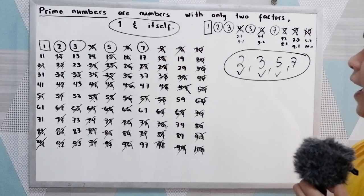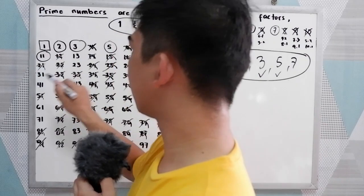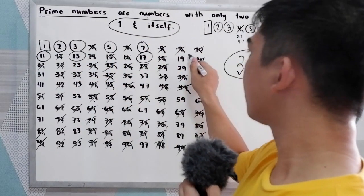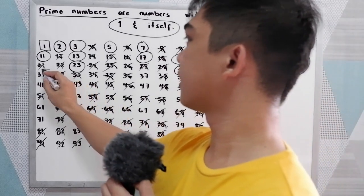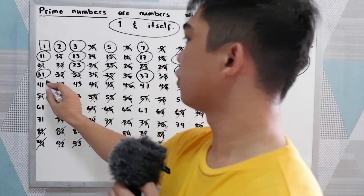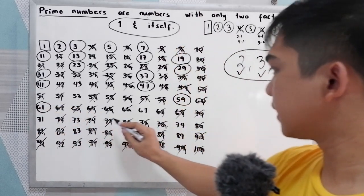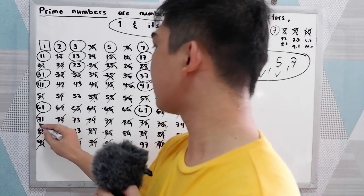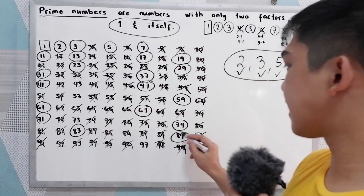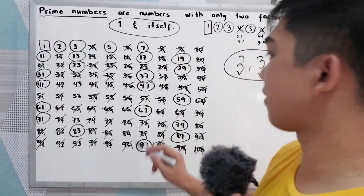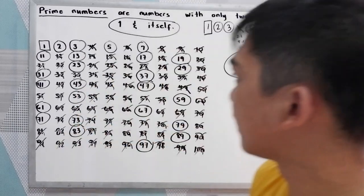Now, encircle all the remaining numbers. The remaining numbers are: 11, 13, 17, 19, 23, 29, 31, 37, 41, 47, 59, 61, 67, 71, 79, 83, 89, 97, and also 43, 53, and 73.